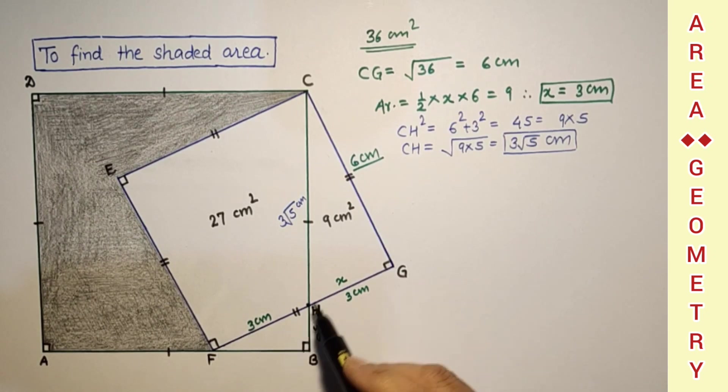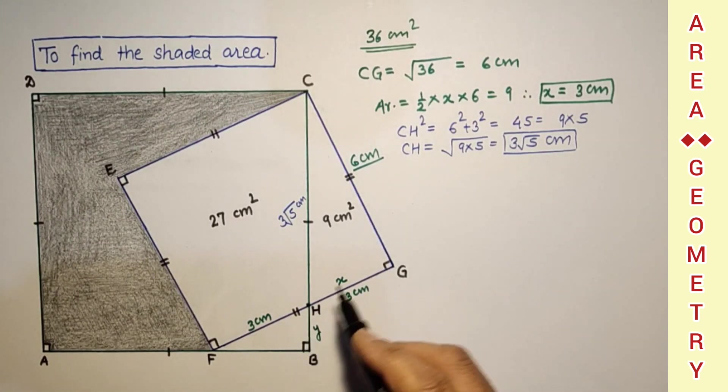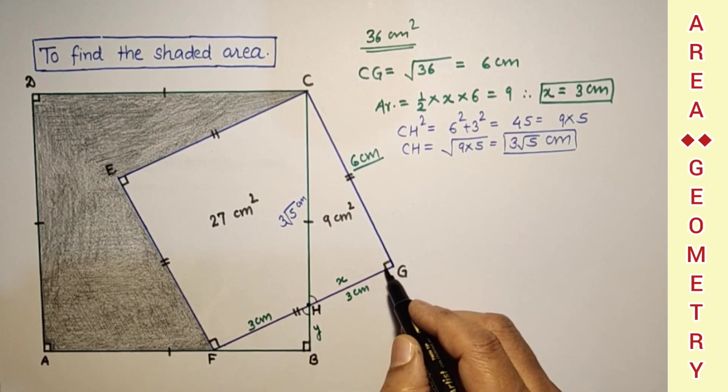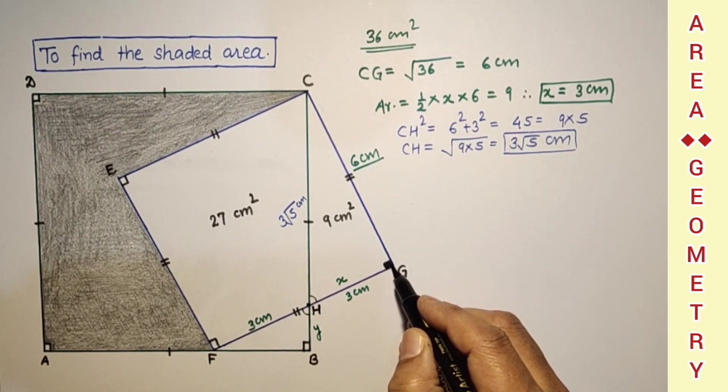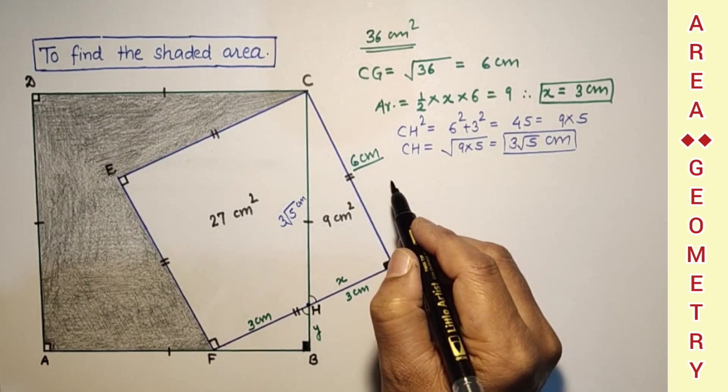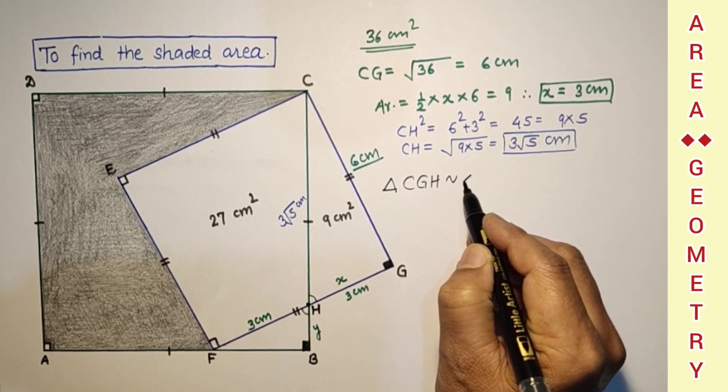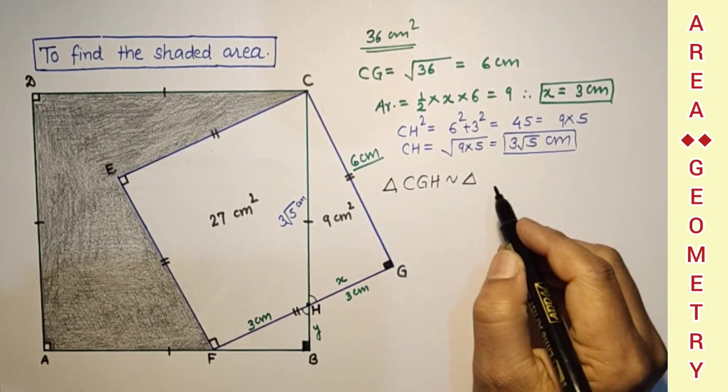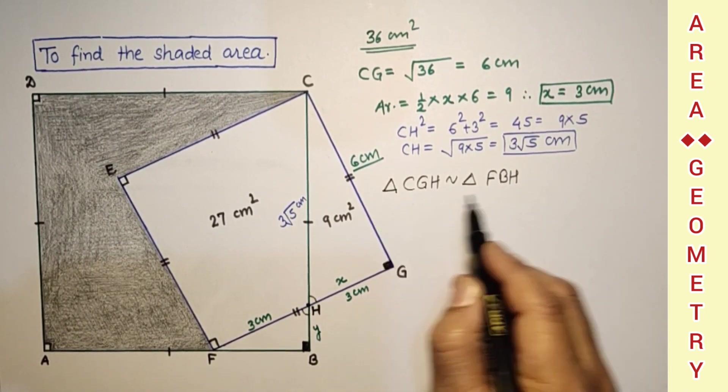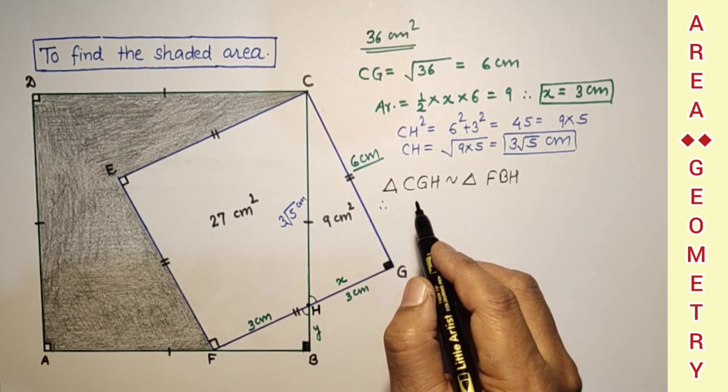Considering these two triangles FHB and this CGH, these two are similar triangles. As these two angles are equal, vertically opposite, and this is 90 and this is also 90. So by AA it is of similarity, these two triangles, triangle CGH is similar to triangle FBH. And since these two are similar, the corresponding sides will be in proportion. So we can say that